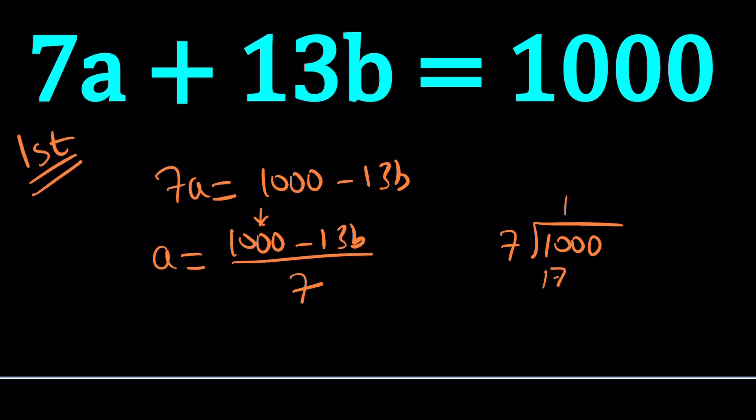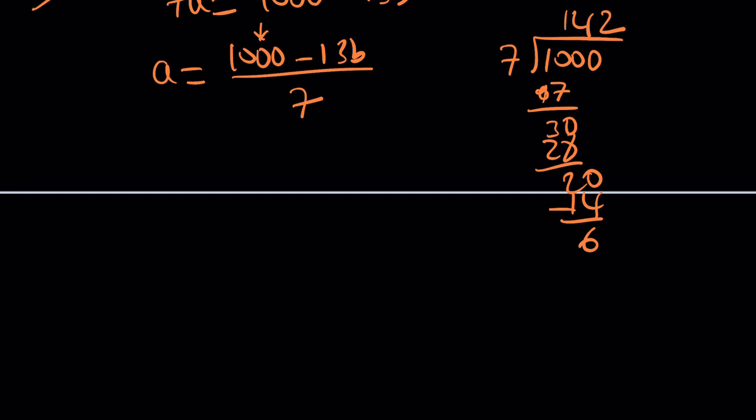First of all, notice that 1,000 is not divisible by 7. Which number is divisible by 7? You can find it by dividing 1,000 by 7 and looking at the remainder. 7 goes into 10 once, giving you 7, then 30, 4 times 7 is 28. Bring down the 0, and this is 2 times, and you get a remainder of 6. Which means 1,000 minus 6 is divisible by 7, which is 994, and that is 142 times 7.